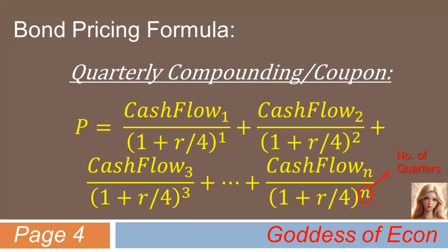Similarly, the bond pricing formula becomes what is shown here, if we assume quarterly compounding and quarterly coupon. The annual rate here is divided by 4 in each period, with n representing the total number of quarters to maturity.